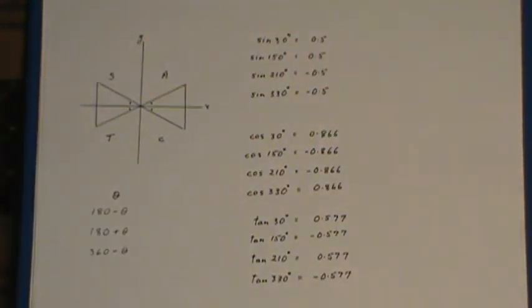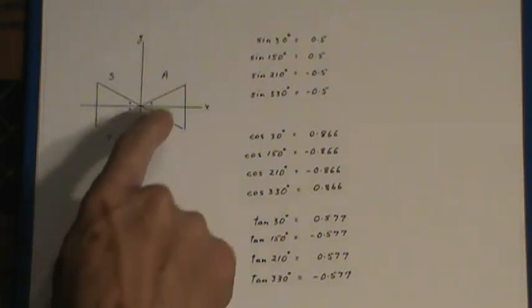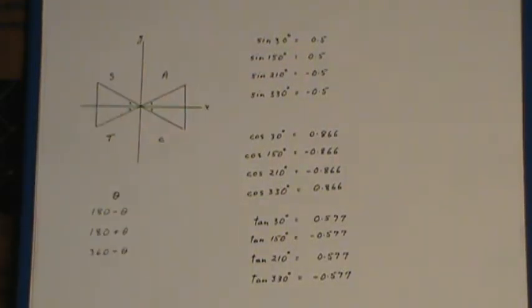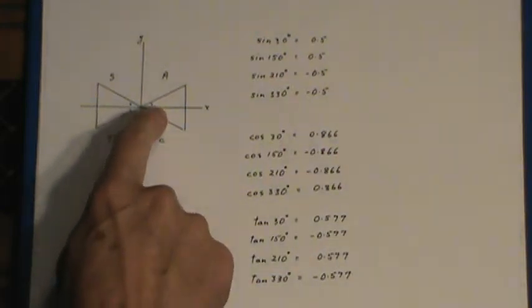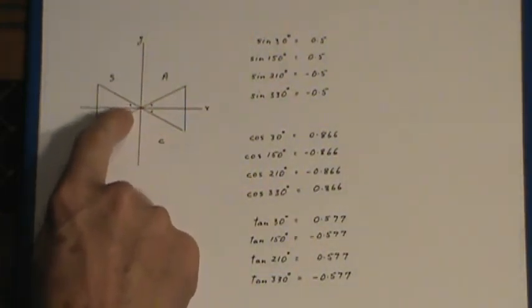What you should probably do is pick any angle that you want. For example, if you pick 10 degrees, and you check out the sine, cos, and tan of 10, and compare that to 170, which is 10 less than 180.